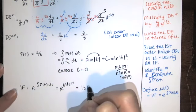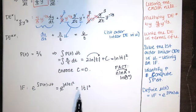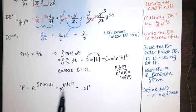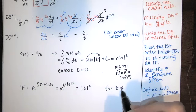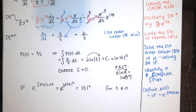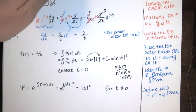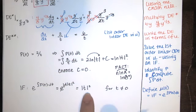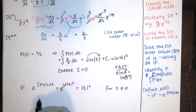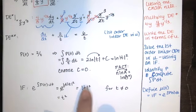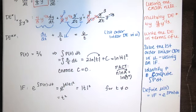The absolute value of t squared is always going to be positive except when t is 0, where the natural log of 0 is undefined. So t equals 0 is the only disallowed value. Whether t is positive or negative, the absolute value of t squared is just t squared. If you take negative t and square it, you get t squared; take positive t and square it and you get t squared. So either way, our integrating factor is t squared.